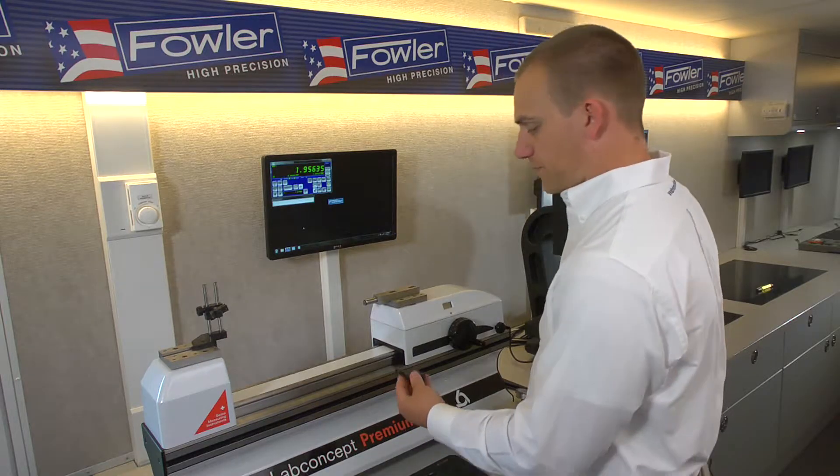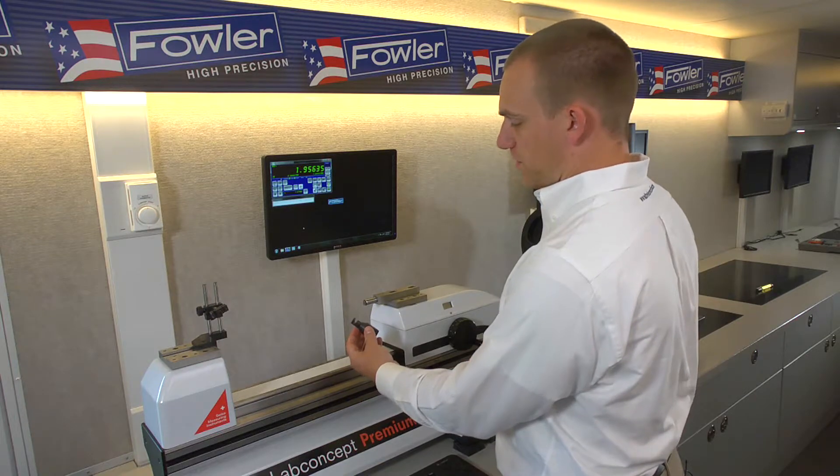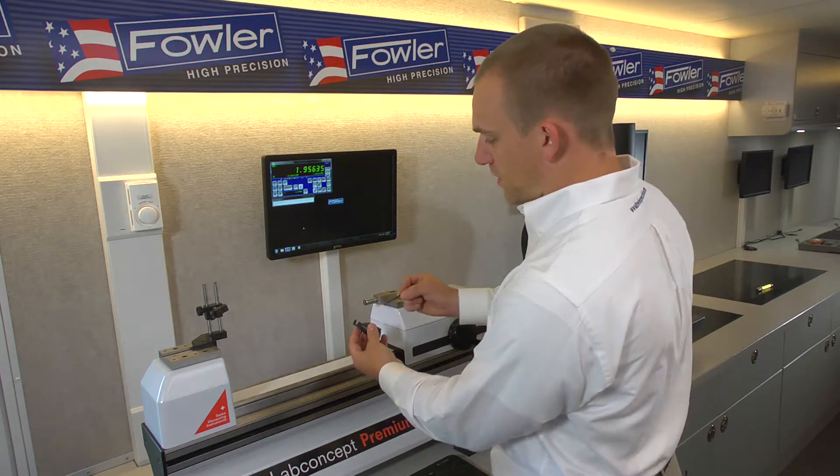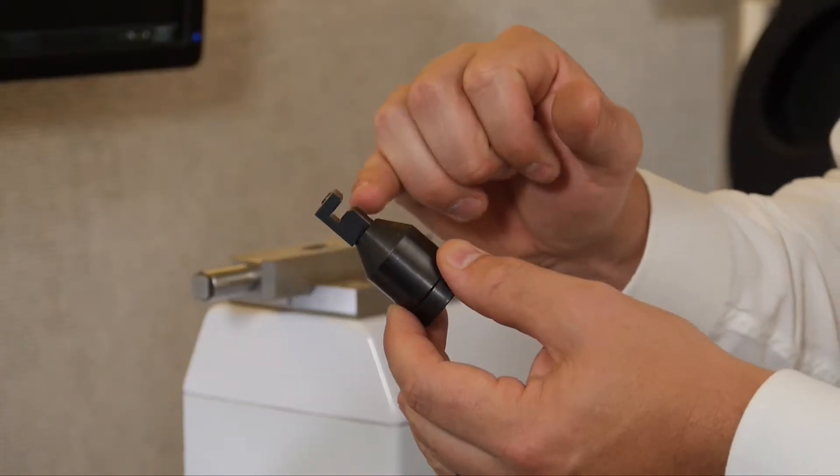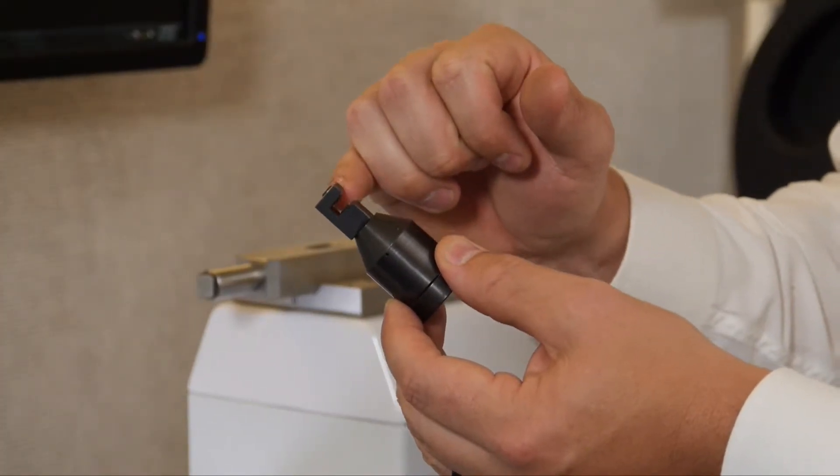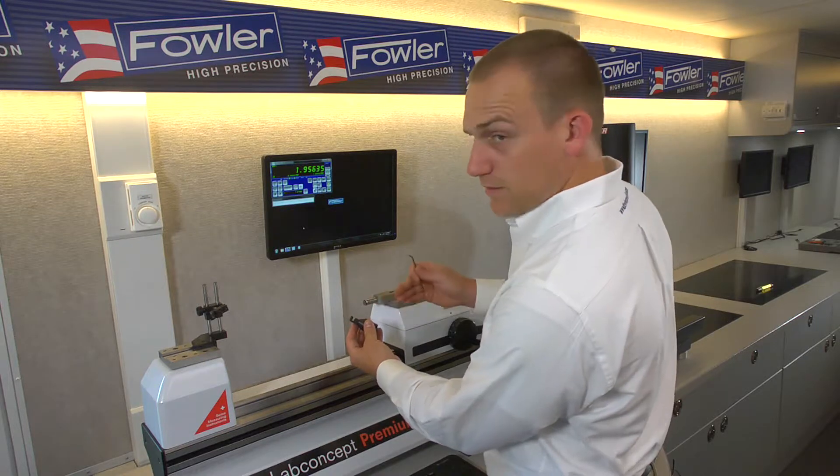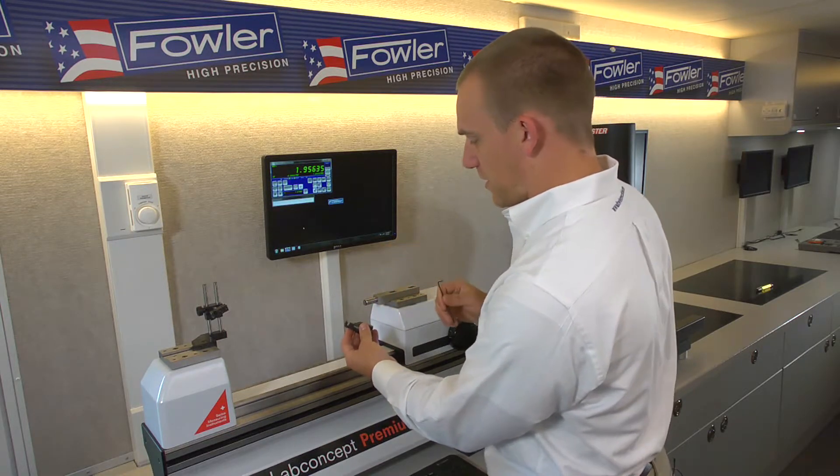For the right anvil we have this device here which slips over the standard anvil set. And this has a gap in here with two contact points so you want to get your test indicator point between the two so you can touch off the left and the right side to check it for linearity in both directions.